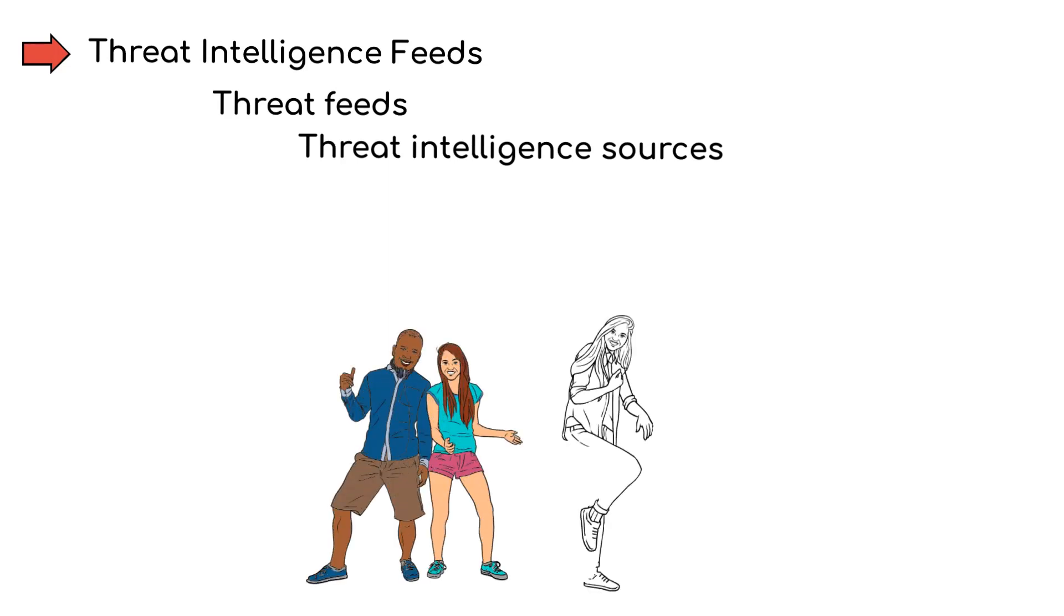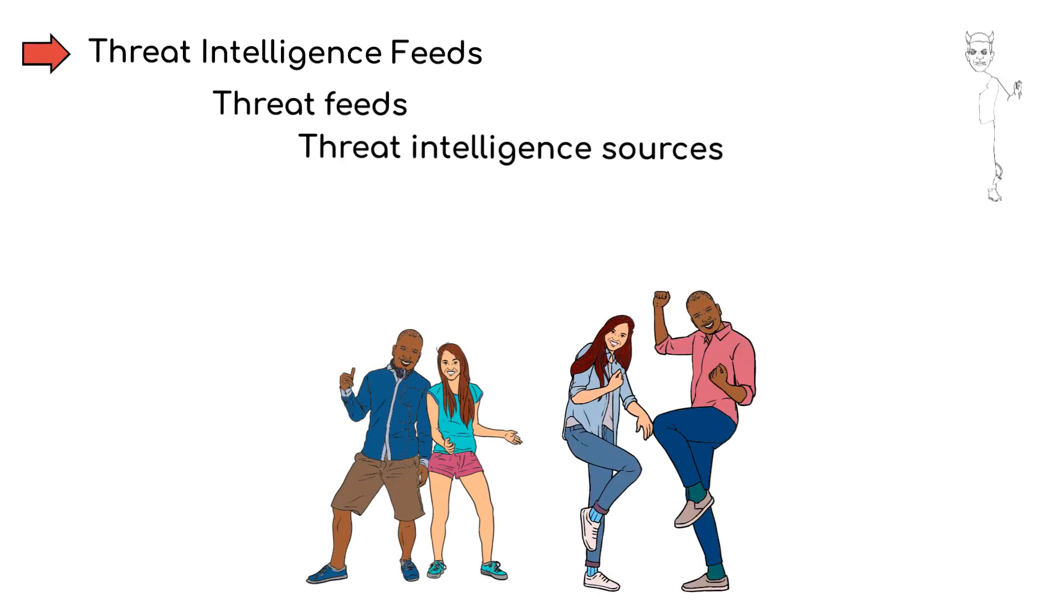Next, we have threat intelligence feeds, also known as threat feeds or threat intelligence sources. Imagine you have a secret club and you want to know if any troublemakers are planning to do something naughty in your club.